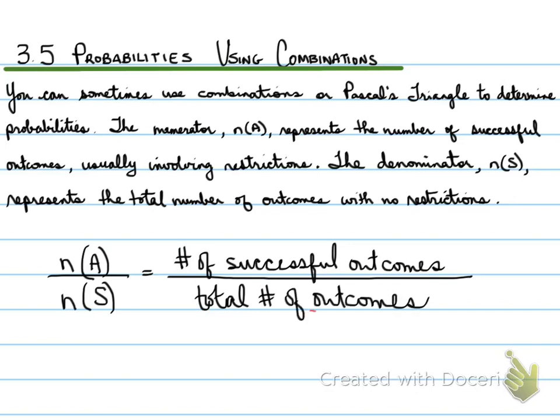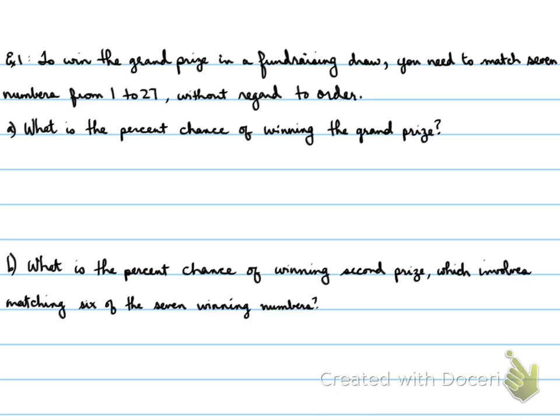So, what we do here is we're looking at examples to solve the problem. To win the grand prize in a fundraising draw, you need to match numbers from 1 to 27 without regard to order. Part A, what is the percent chance of winning the grand prize? Part B, what is the percent chance of winning the second prize, which involves matching 6 of the 7 winning numbers?